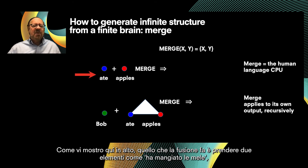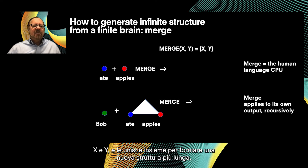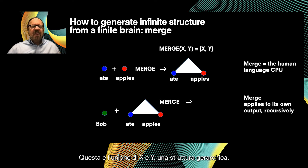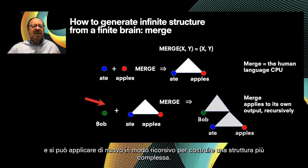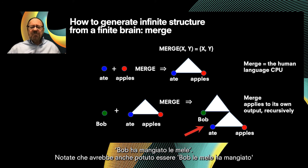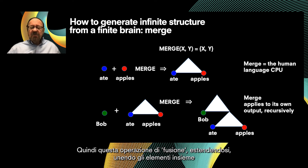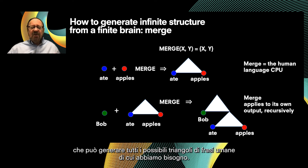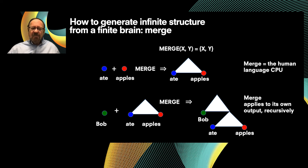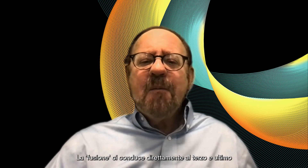This recursive structure-building operation required to build stacked triangles in the brain can be described as the computational operation 'Merge.' Merge takes two elements — like X and Y — and glues them together to form a new larger hierarchical structure, the union of X and Y. Merge can then apply to its own output recursively and construct a larger structure, like 'Bob ate apples.' Notice the linear order doesn't matter — it could just as well be Japanese word order. This Merge operation is the human brain's CPU for language, the simplest combinatorial operator that generates all possible human sentence triangles, and it doesn't seem to be present in any other animals.